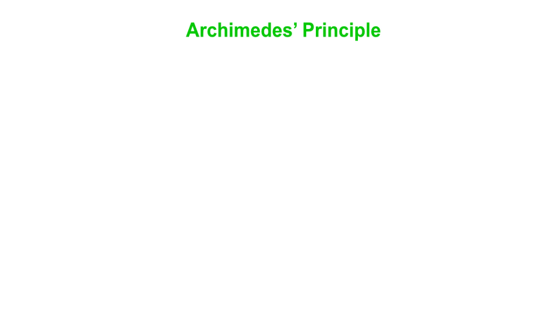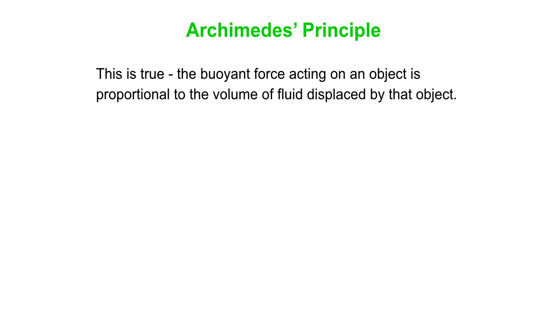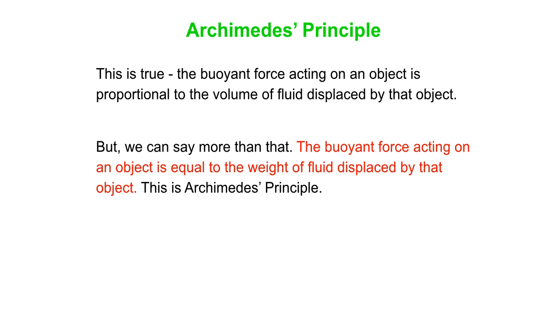So what is Archimedes' Principle? And we know this is true. The buoyant force acting on an object is proportional to the volume of fluid displaced by that object. But we can do a lot better than that. We can say that the buoyant force acting on an object is equal to the weight of fluid displaced by that object. And that is known as Archimedes' Principle after Archimedes, who was Greek.